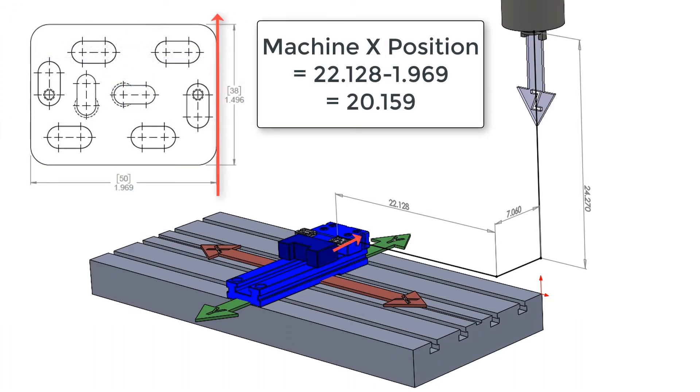For example, if I wanted to position the tool to cut the end of my part where the red arrow is, I would program x1.969 as I always program from the part zero. The machine would go to x20.159 because it always works relative to its home position.